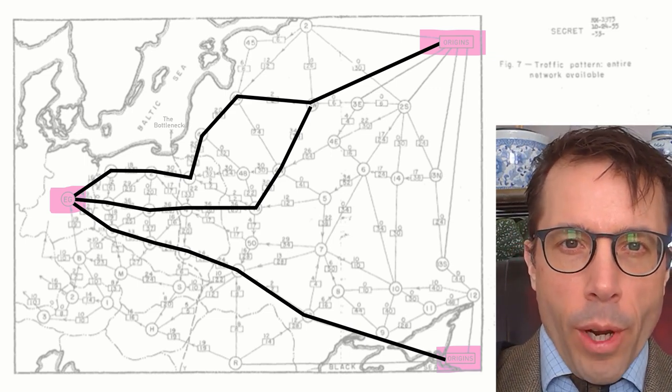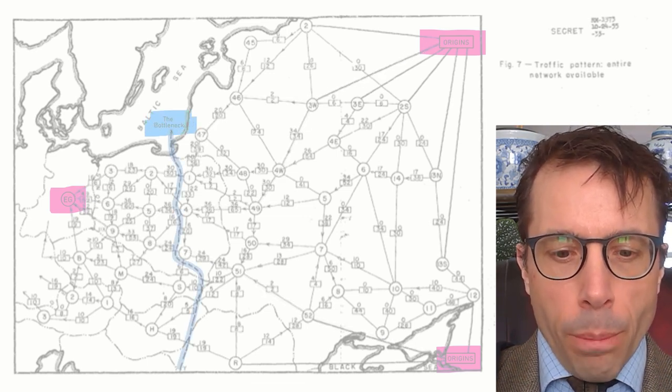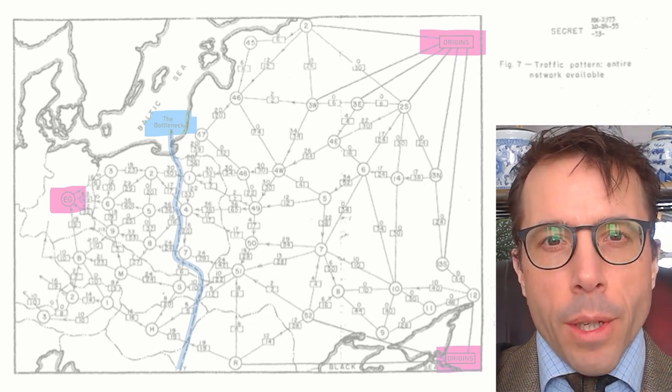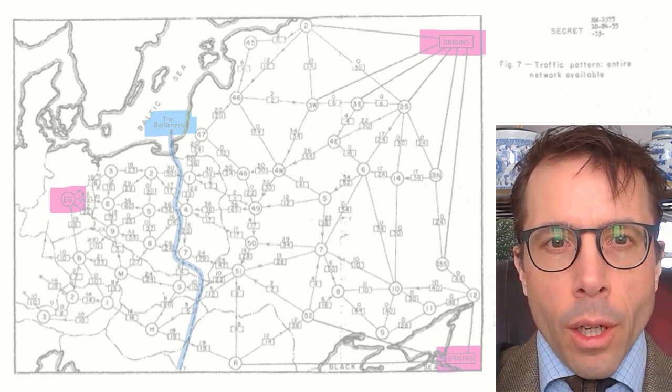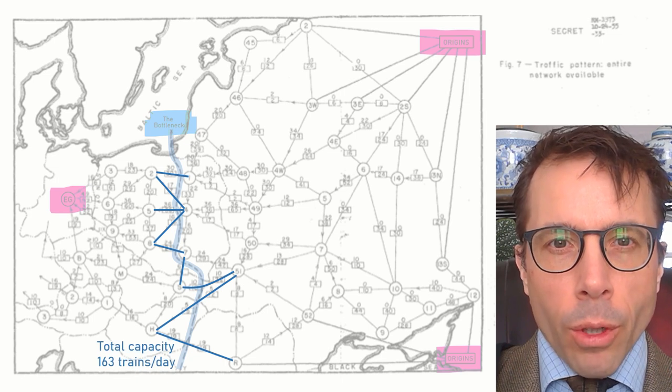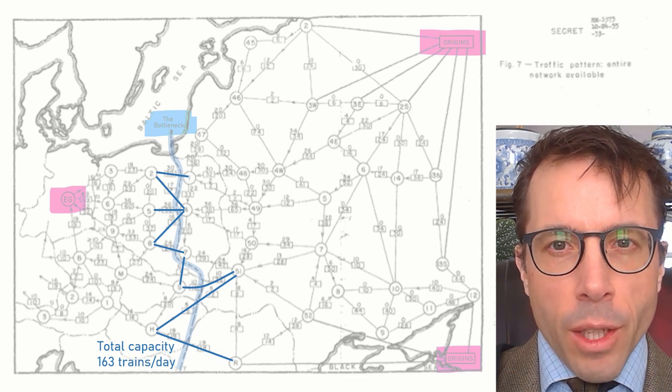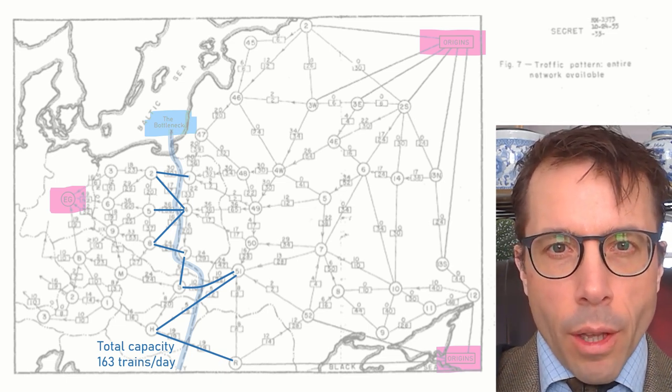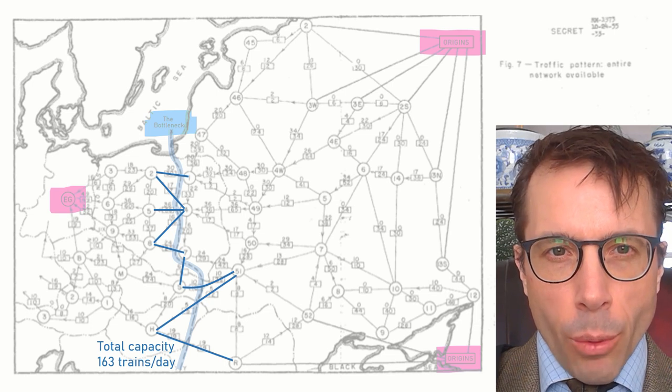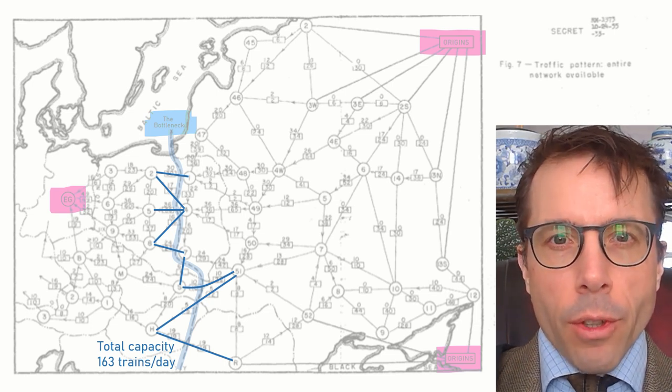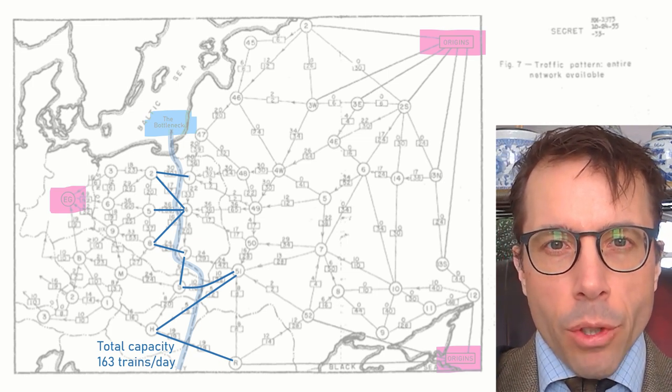This diagram from the RAND Corporation has a dotted line down the middle which they're labeling as the bottleneck. This line divides the map in two, it separates East Germany from the oil refineries in the east, and so every train load of oil has to cross this blue dotted line at some point. It could cross on any one of these links, the links that go from one side to the other, but it has to cross one of them. Therefore, if we add up the capacities of all of these blue edges, which in this case comes to 163 trains per day, it gives us an upper bound on the total amount of oil that can be shipped to East Germany.